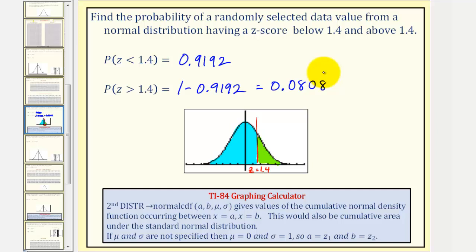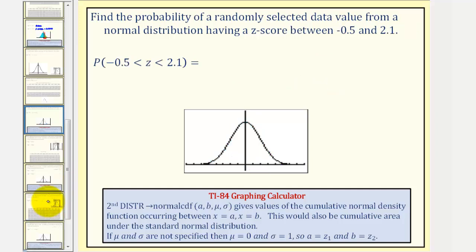Let's look at a second example. Here we want to find the probability of a randomly selected data value from a normal distribution having a z-score between negative 0.5 and 2.1, which we can express as P(-0.5 < z < 2.1).